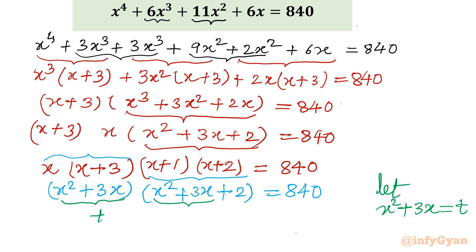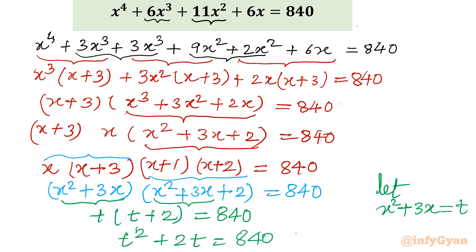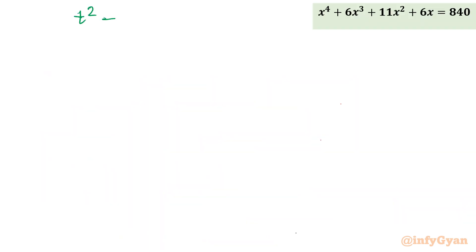Substituting, I write t(t + 2) = 840, which gives t² + 2t = 840. Remember our substitution: x² + 3x = t. And remember also — do not forget to subscribe to my channel! Now to complete the square on the left side, I write t² + 2t + 1 = 841, adding 1 to both sides.